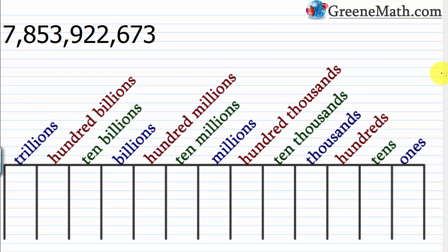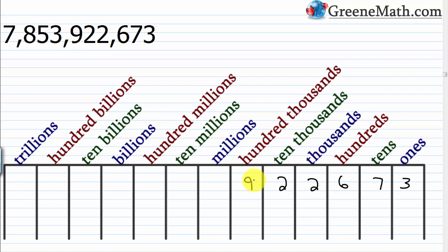For the next problem, we have 7,853,922,673. Take the 3 and put it in the ones place, then move left: 7 in the tens, 6 in the hundreds, 2 in the thousands, 2 in the ten-thousands, 9 in the hundred-thousands, 3 in the millions, 5 in the ten-millions, 8 in the hundred-millions, and 7 in the billions.